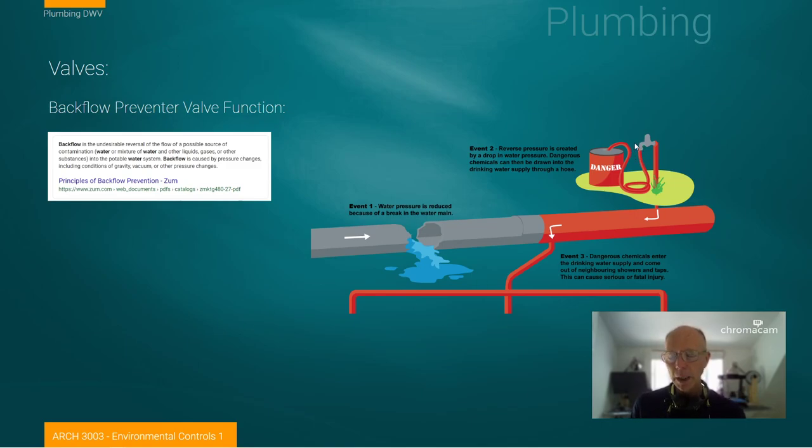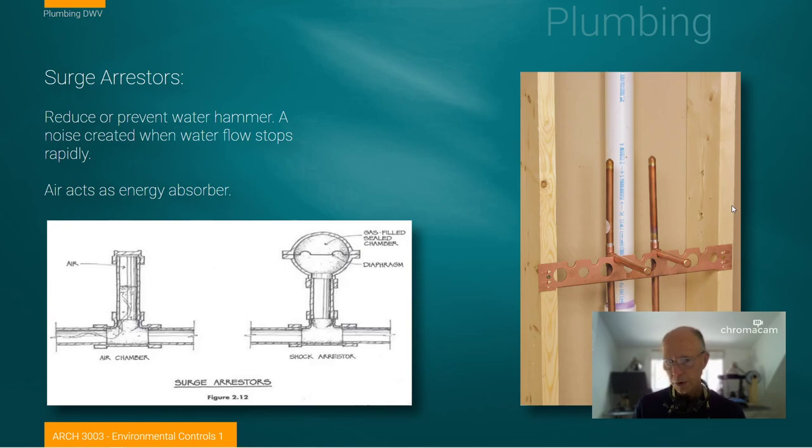It used to be, in many cases, you could have what's called a vacuum breaker here, where if pressure was lost, it would be impossible to siphon through the individual unit. Sometimes those are still required, but they wouldn't be required or necessary if there was a backflow preventer for the home system or for the commercial system.